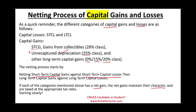We're going to start slowly by looking at the first example where we have a situation of gains and see how we net them out. Then we'll move into a more complex situation where we could have gains, losses, and different categories and work through the netting process.